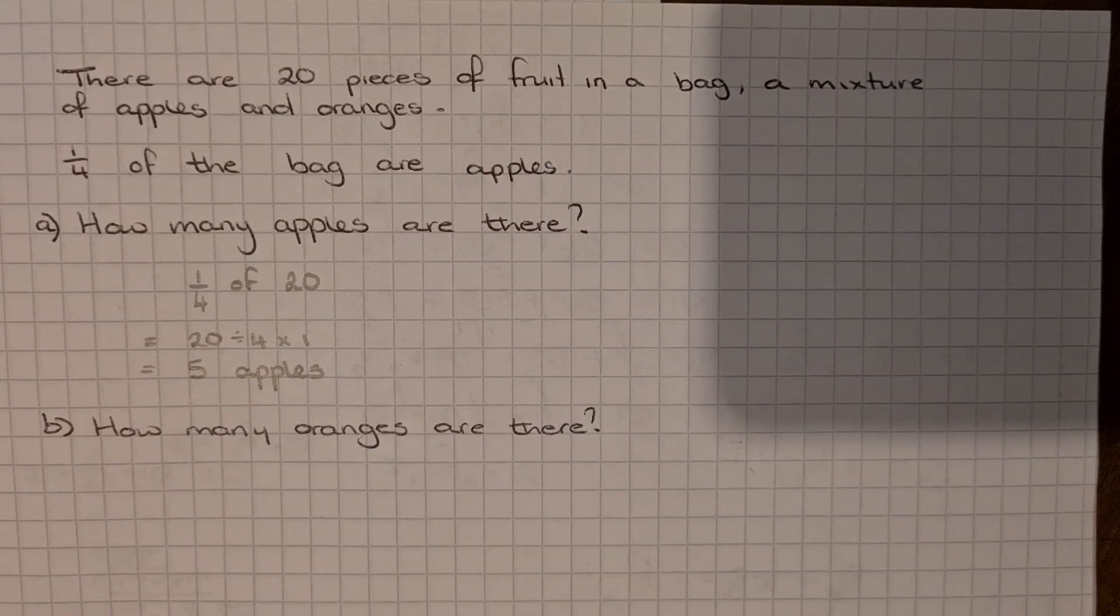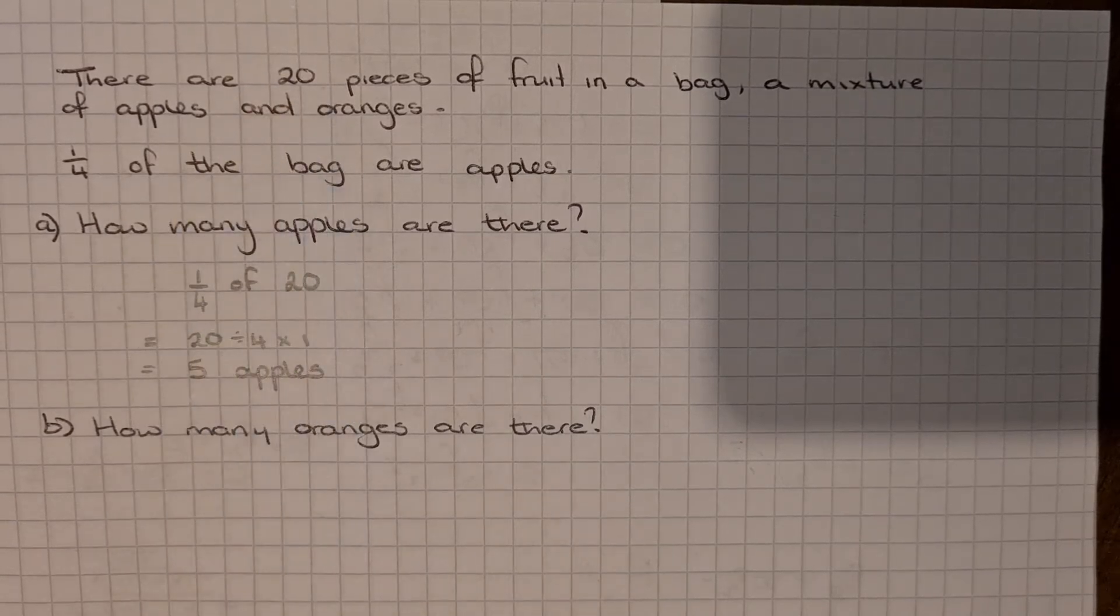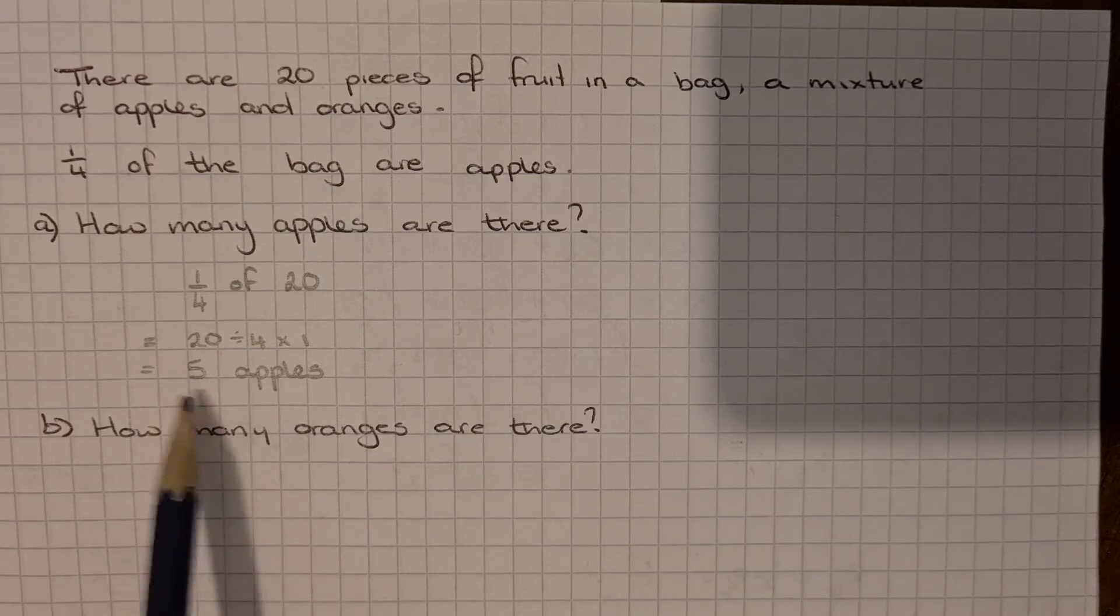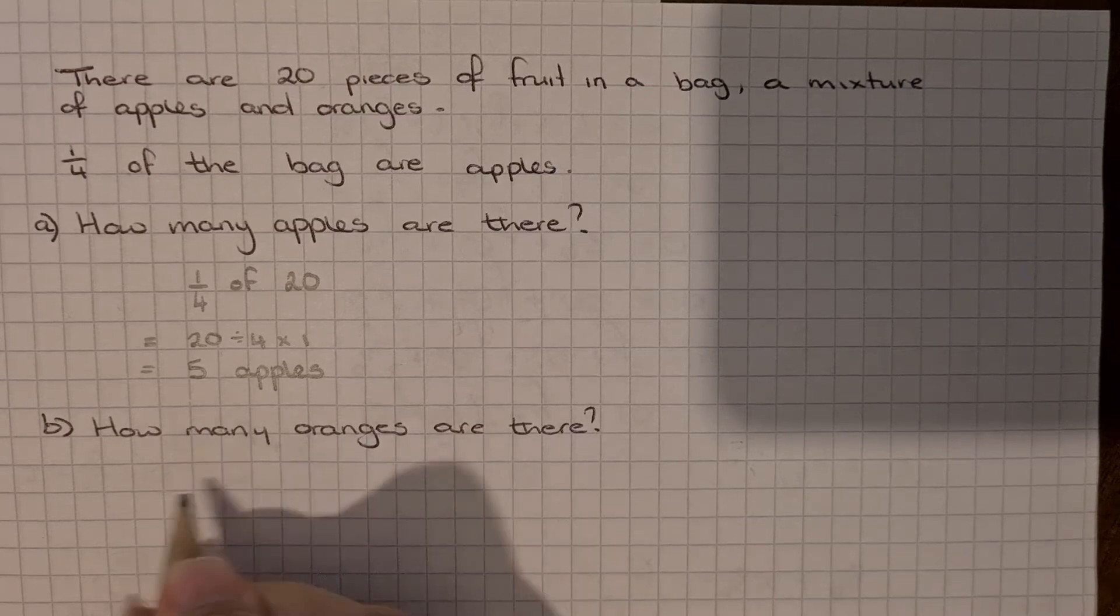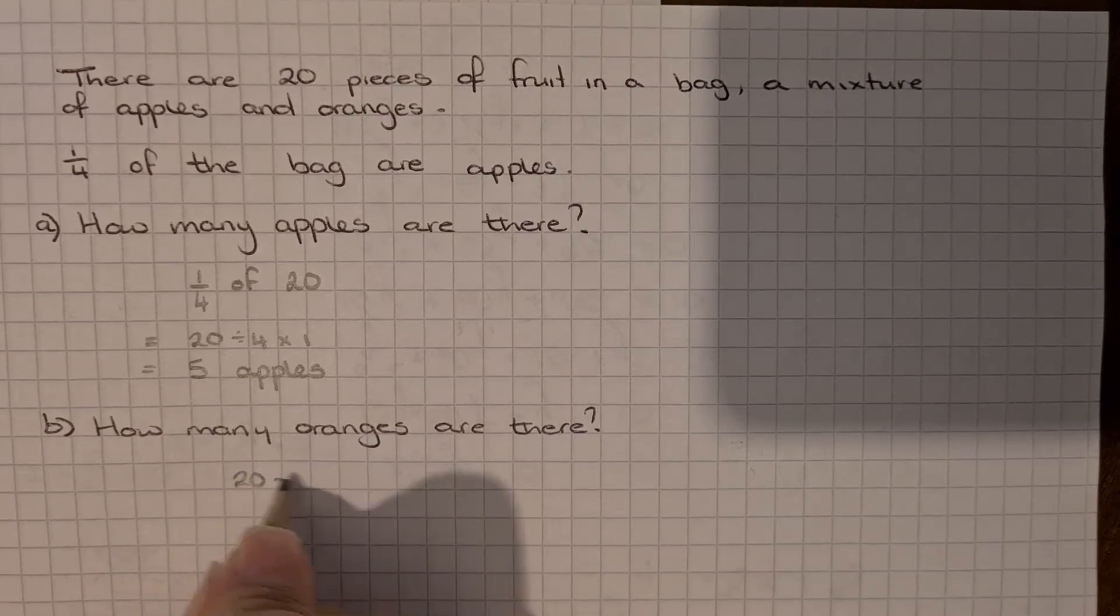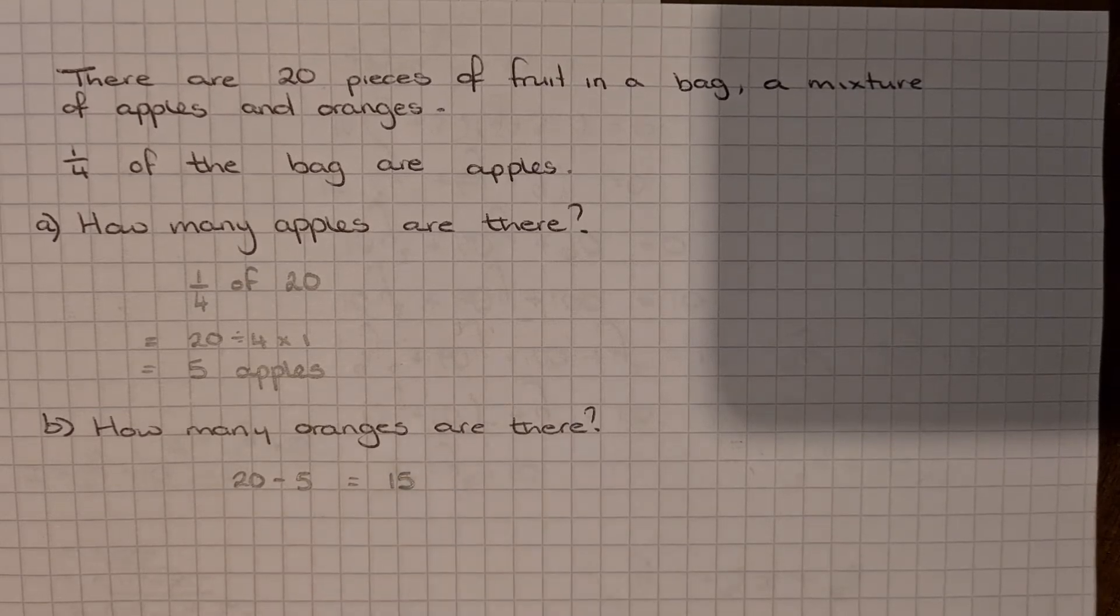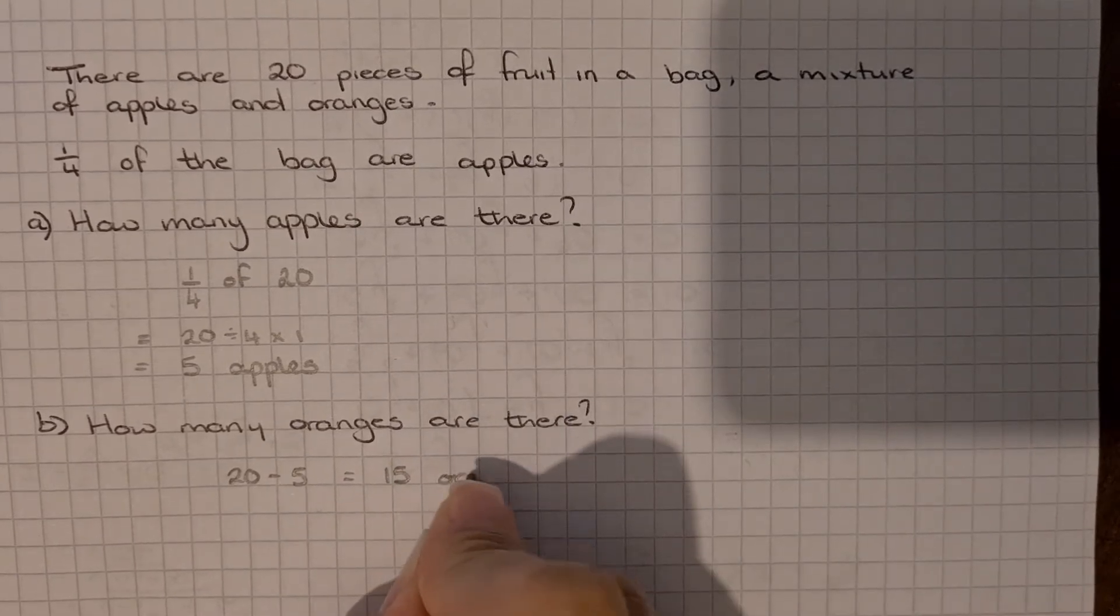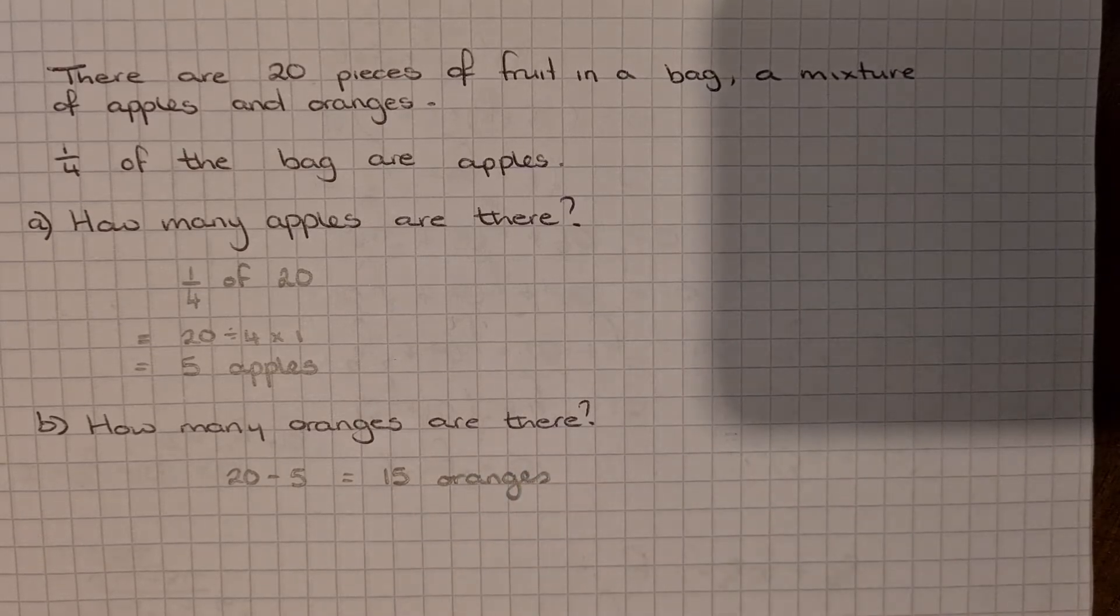Part B says how many oranges are there? Now we know the total number of pieces of fruit in the bag is 20. We know that only 5 of them are apples, so to work out what's left over we can just do 20 take away the 5 apples, would leave us with 15 oranges. So there's 15 oranges in the bag and 5 apples.